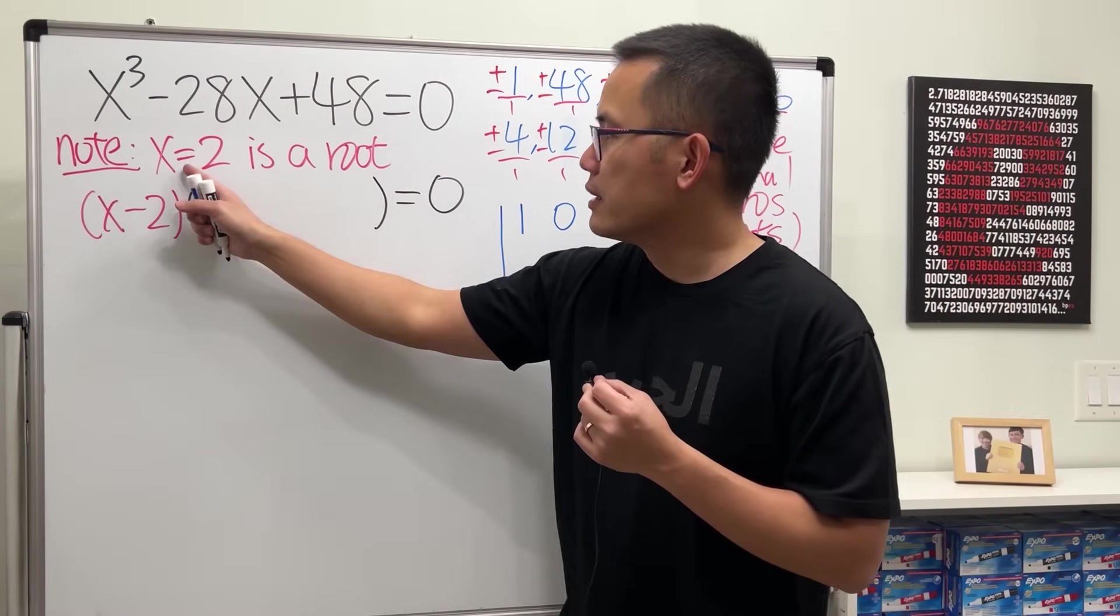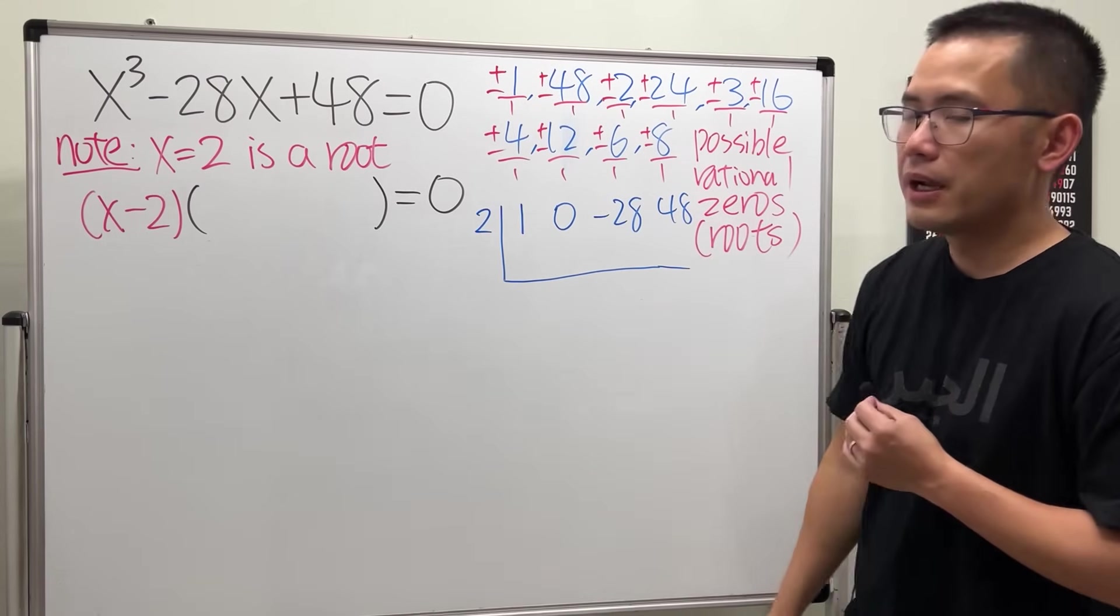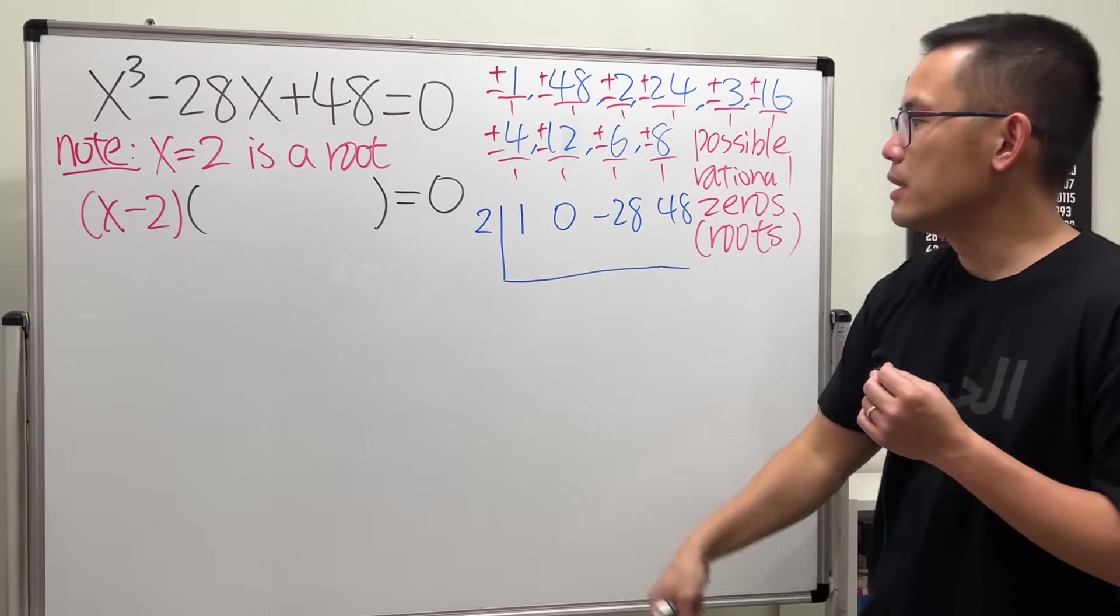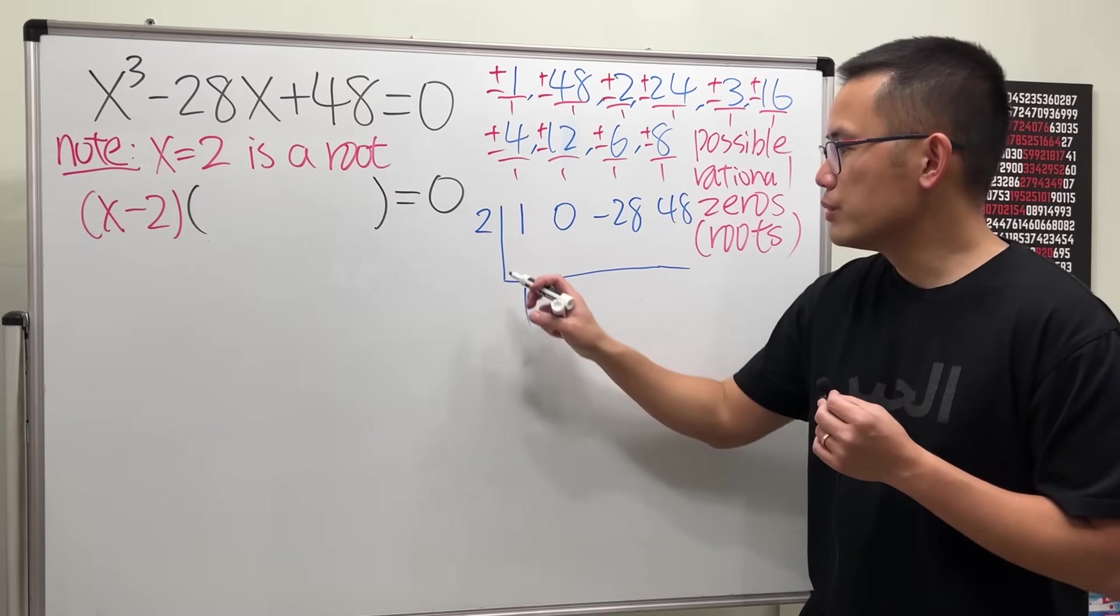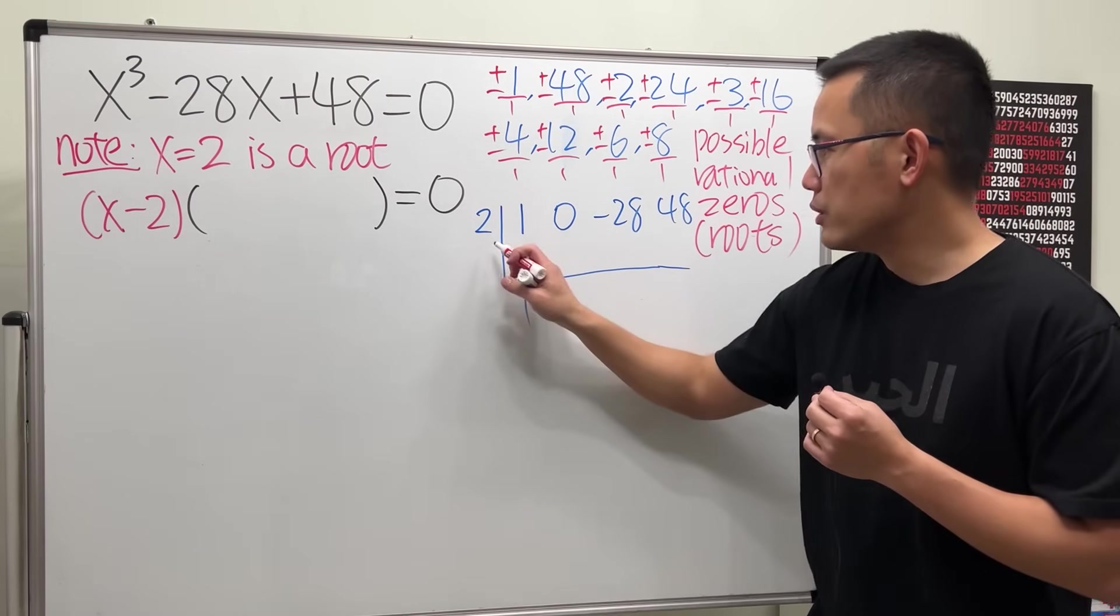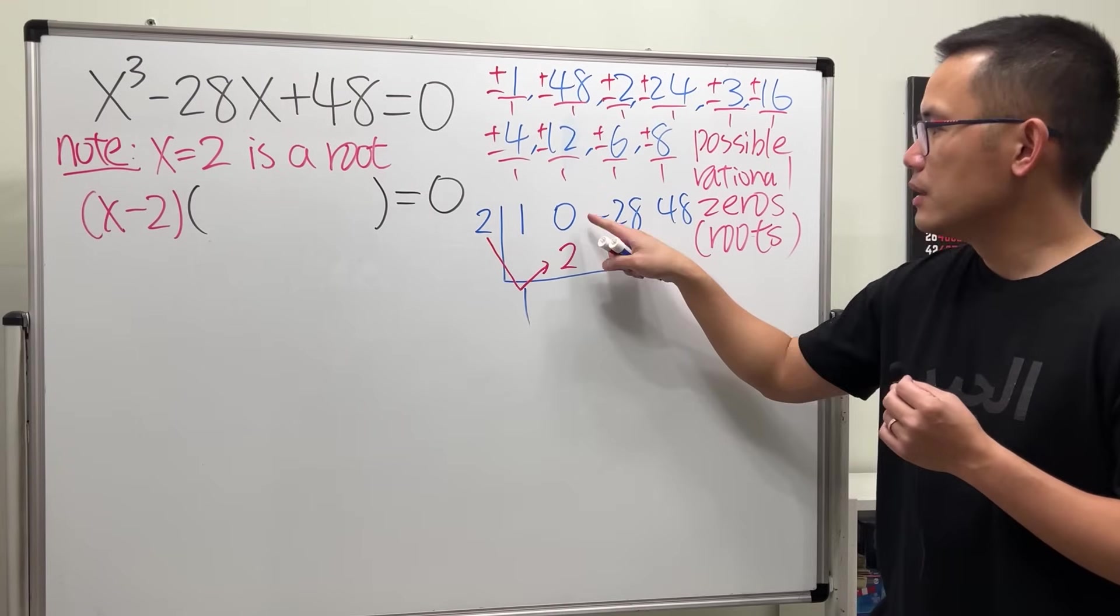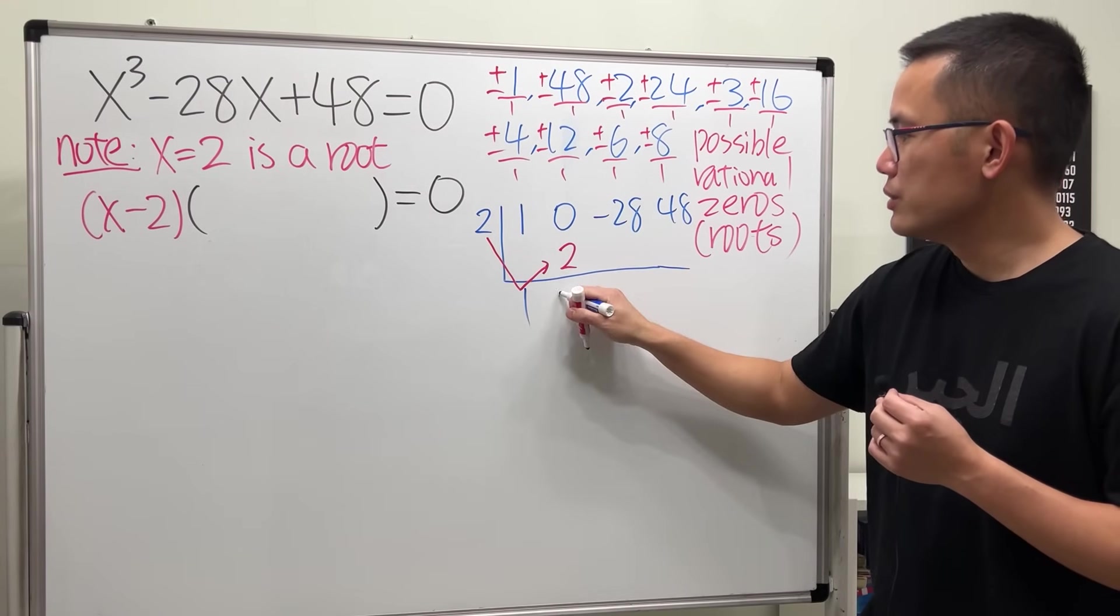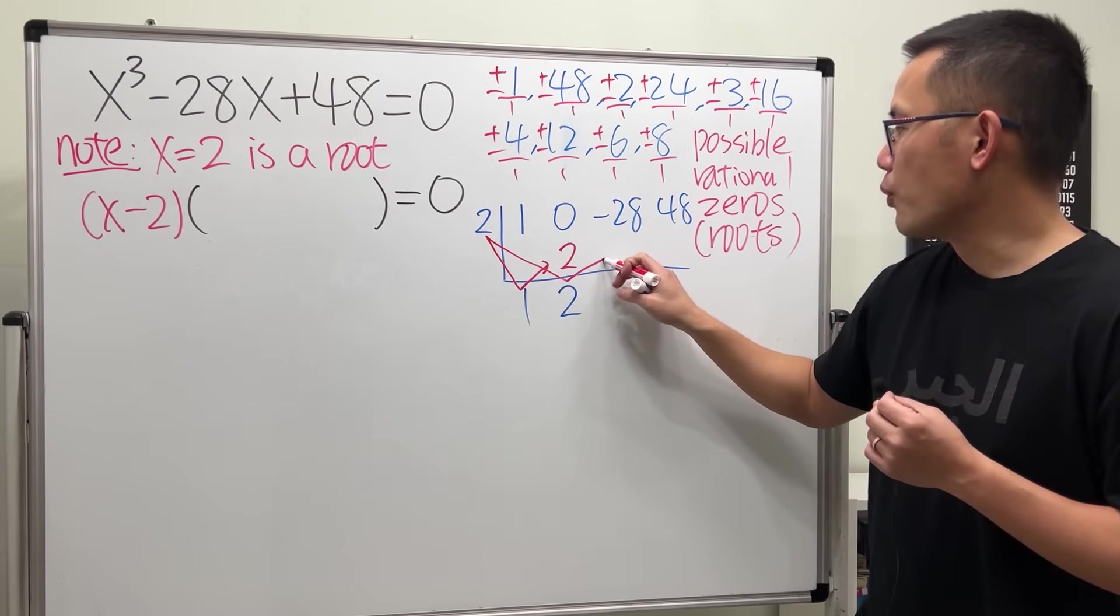Then we are going to set it up because x is equal to 2, you put a little 2 right here. This is the setup. Now, this is the first step: bring down the 1. And to continue, what you do is you take the 2 times the 1 and then put it here, which is a 2. Now have a look, 0 plus 2 is 2, and then just continue: 2 times 2 which is 4, put it here.